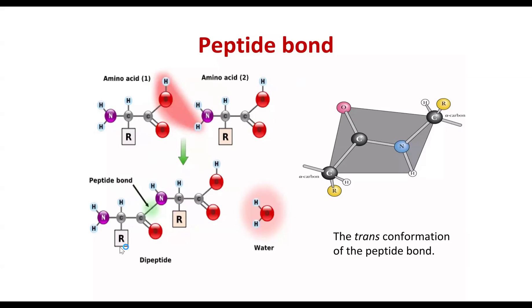When you have two amino acids joined together, we call it a dipeptide. If you have three amino acids, it is called a tripeptide. Four amino acids joined together is called a tetrapeptide. And if you have ten amino acids, you have a decapeptide.